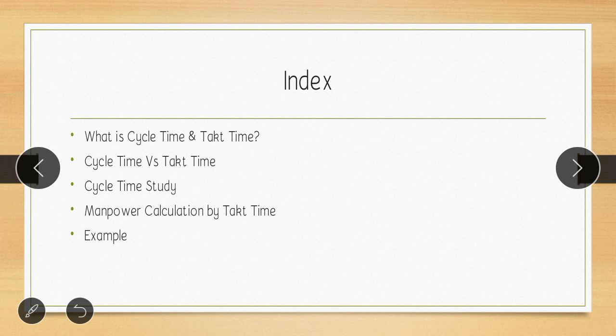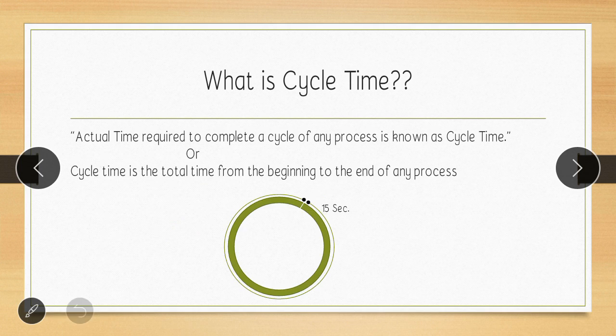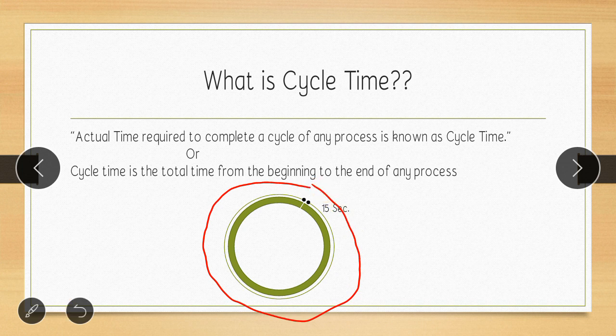So firstly, what is cycle time? It's the actual time required to complete a cycle of any process. We can also say cycle time is the total time from the beginning to the end of any process. In this picture you can see: if I start from this point and again reach the beginning, that total time is the cycle time — for example, 15 seconds in this picture.